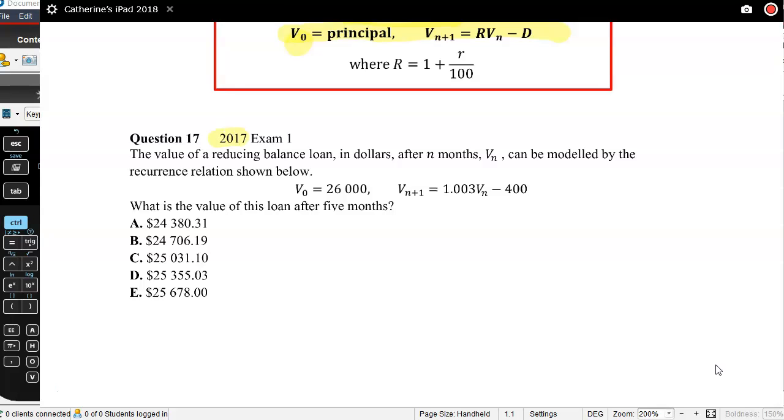This is from the 2017 multiple choice exam, question 17. The value of a reducing balance loan in dollars after N months, VN, can be modeled by the recurrence relation shown below. V0 equals 26,000, VN plus one equals 1.003 times VN minus 400. So what is the value of this loan after five months?